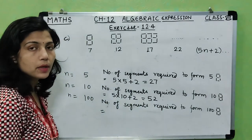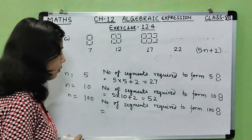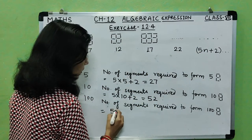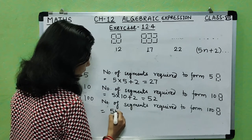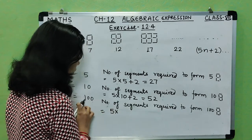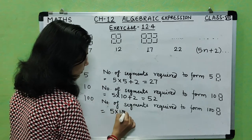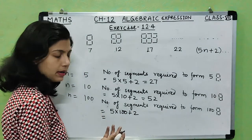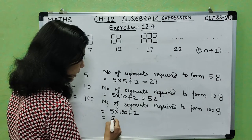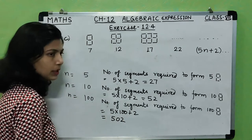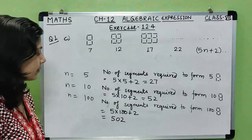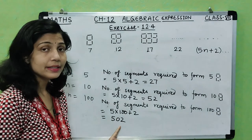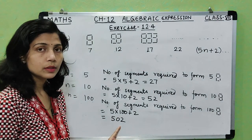For 100 eights, n equals 100, so using the formula 5n plus 2: 5 into 100 plus 2 equals 500 plus 2 equals 502. The number of segments required to form 100 eights is 502.